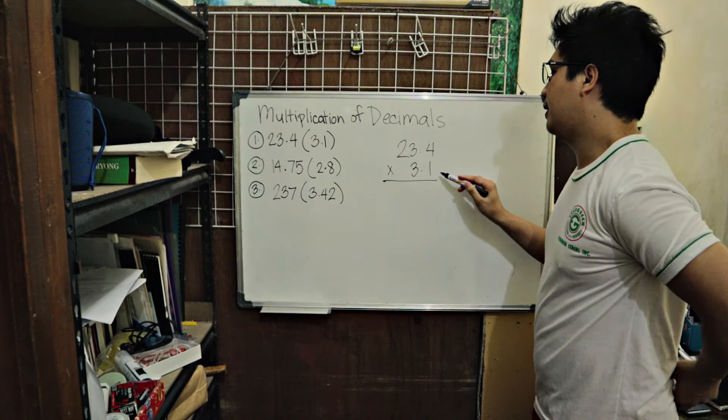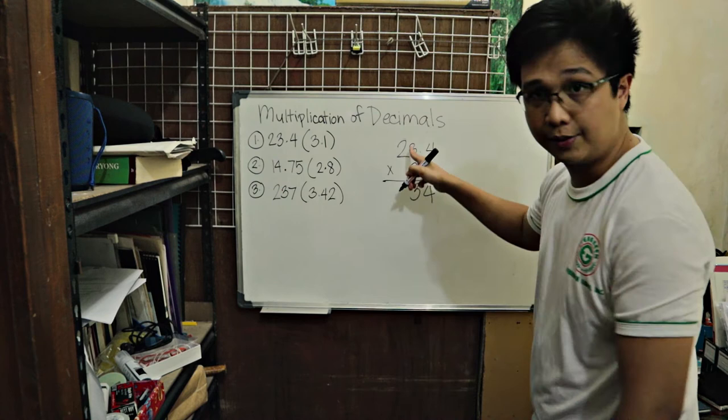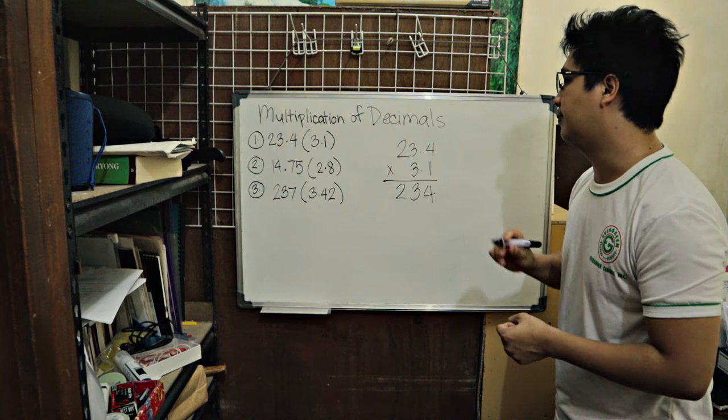Multiplying 1 times 4. So 1 times 4 is 4. And then 1 times 3 is 3. Ibutang siya in the tens place because 3 is in the tens place. 1 times 2 is 2. So what we're doing, we're just multiplying as usual. But may arat o brahon later on sa mga decimal point.